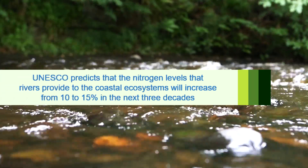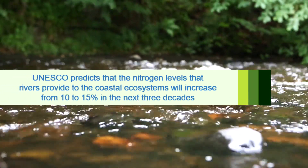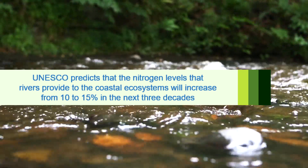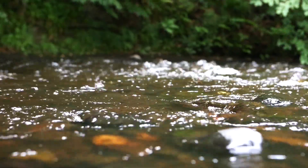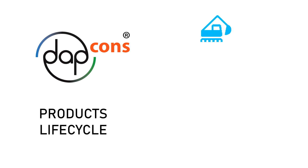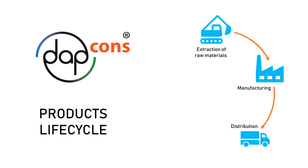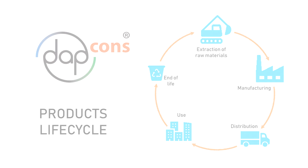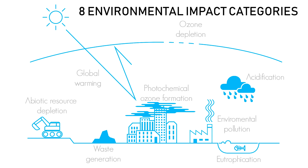According to UNESCO, it is expected that the levels of nitrogen that rivers provide to coastal ecosystems will increase from 10 to 15% as a result of population growth in the next three decades. The Environmental Product Declaration program quantifies the impacts generated by construction products considering their entire life cycle — from the extraction of raw materials to the end of life, passing through manufacture, distribution and use of the product. The environmental declarations take into account 8 environmental impact categories, such as depletion of the ozone layer, waste generation, depletion of abiotic resources, or eutrophication.